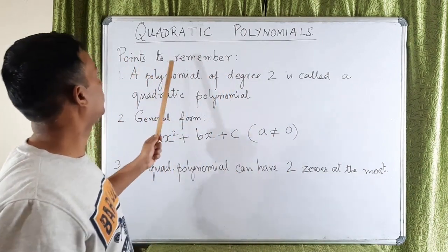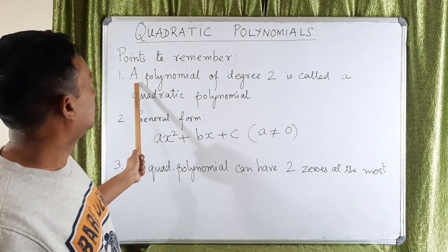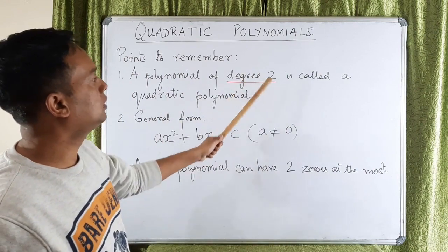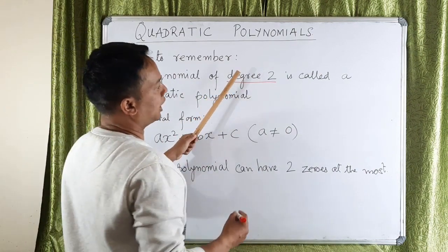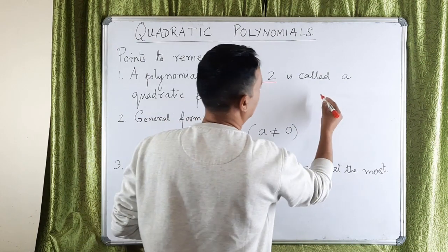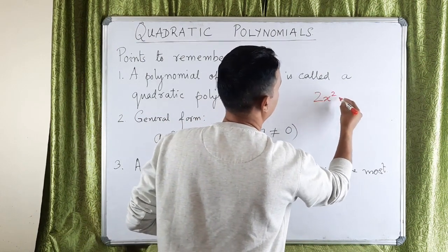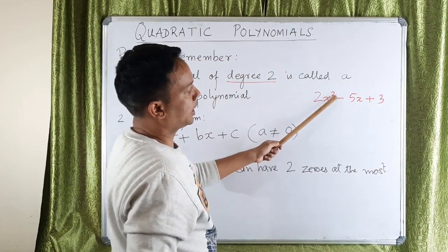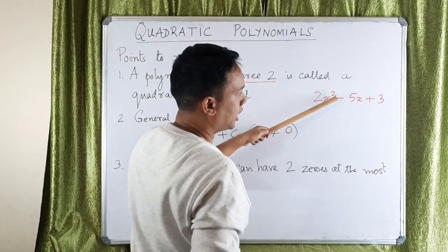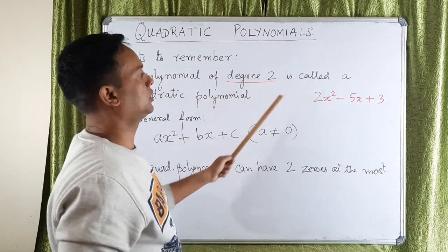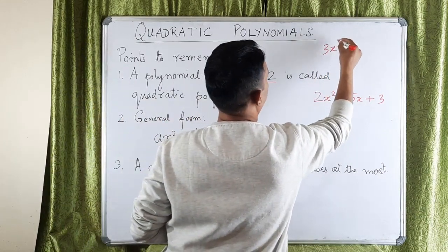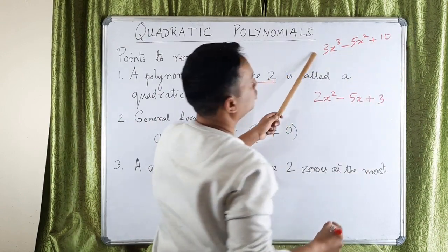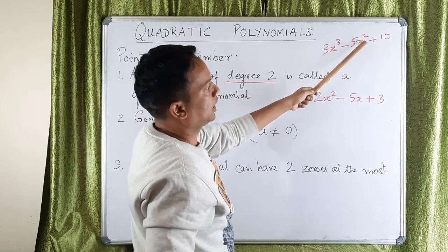There are certain points we really need to remember. The first one: a polynomial of degree 2 is called a quadratic polynomial. Degree 2 means the highest power of the variable should be 2. For example, 2x squared minus 5x plus 3 has highest power 2, so it's a quadratic polynomial. If I write 3x cubed minus 7x squared plus 10, this is not quadratic because the degree is 3.